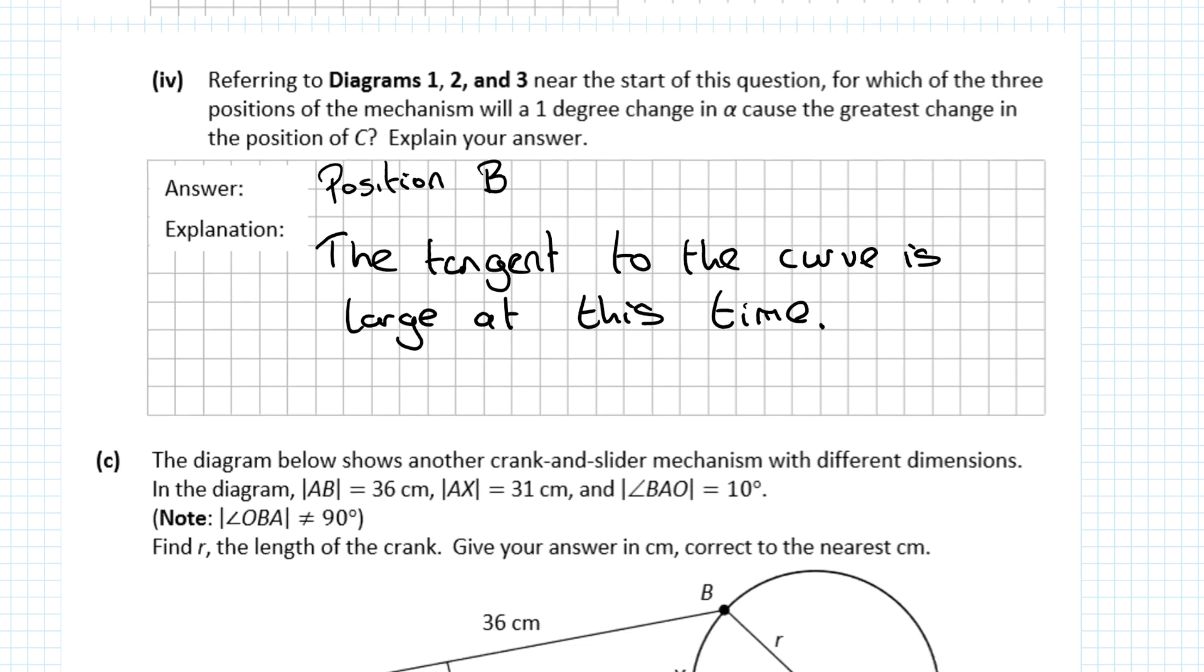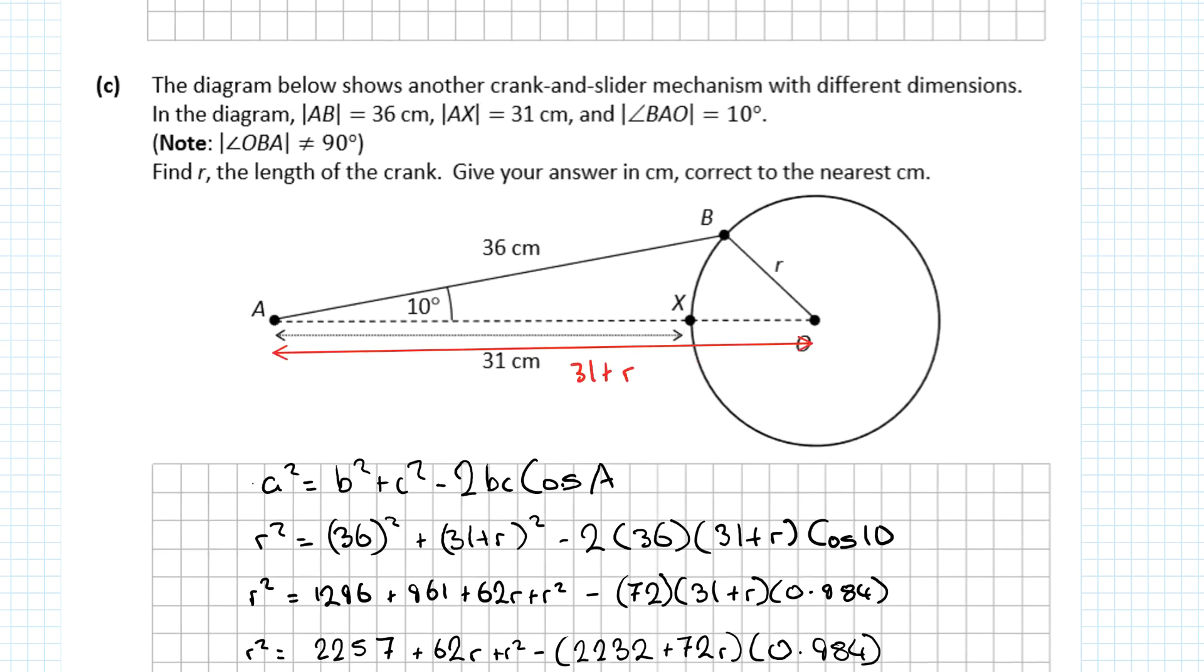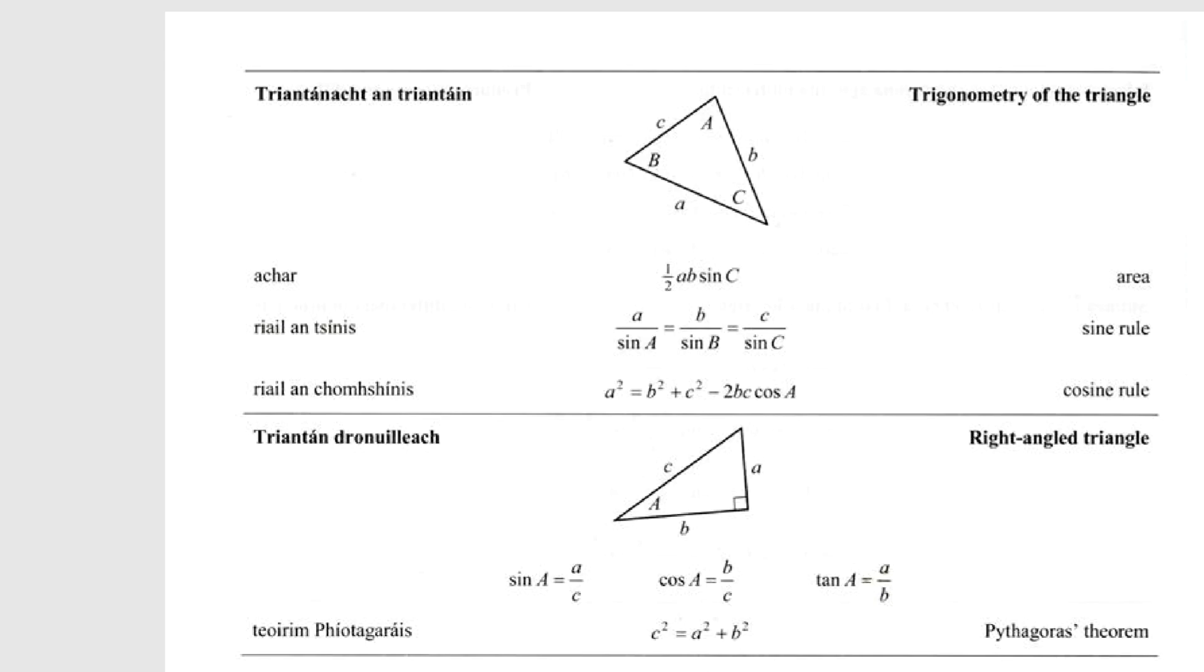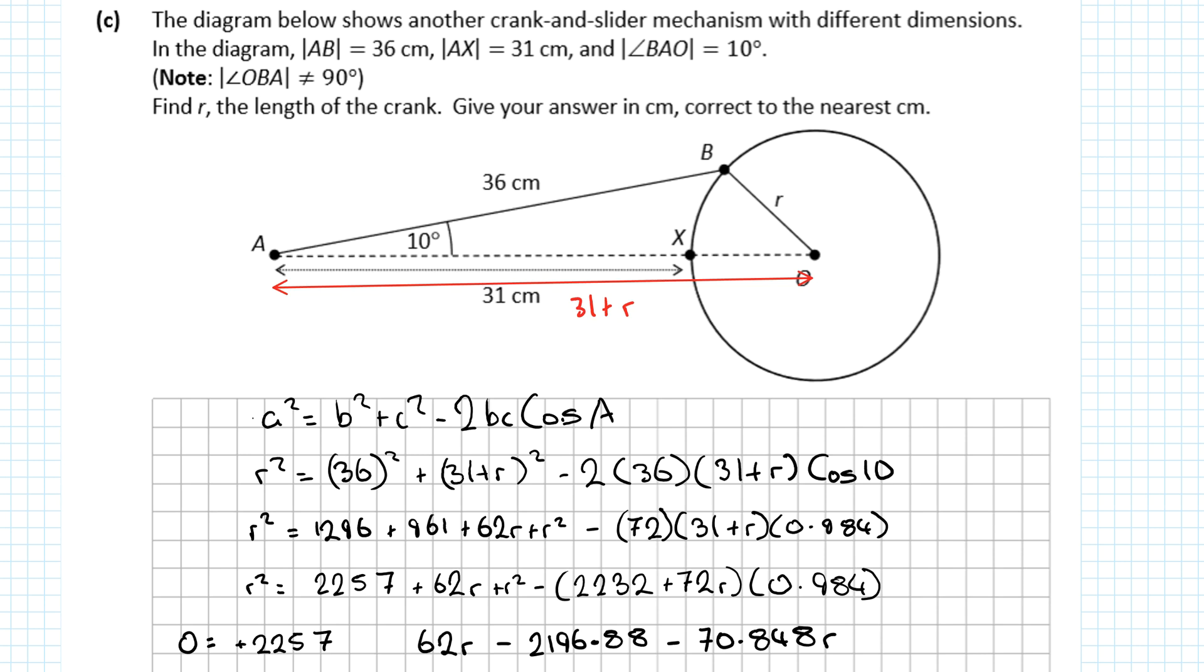Going to the last part: the diagram shows another crank and slider mechanism with different dimensions. We want to find the length of R. What kind of triangle? Non-right-angled. So the only rules I can use are these. Do I know a pair? Do I know that angle on that side? No. Do I know this angle on that side? No. So you're probably going to use the cosine rule.